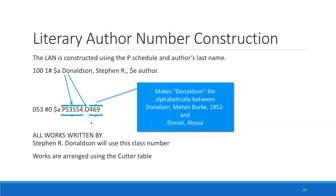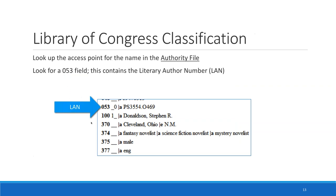A question asks about a 2014 proposal on juvenile literary works cutter numbers — the survey outcome and current status. Bobby says this is the first he's heard of it and will have to look into it. He notes that the PCC has a ban on adding PZ numbers to the 053 field in the authority file with no explanation, and he has asked for them to reconsider it as it would make life easier for catalogers who use the PZ schedule.